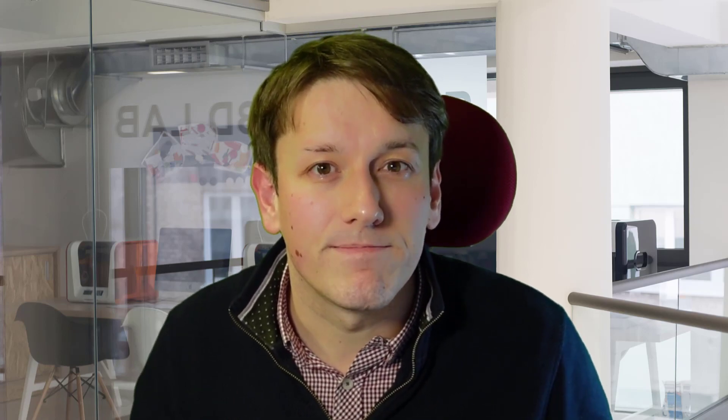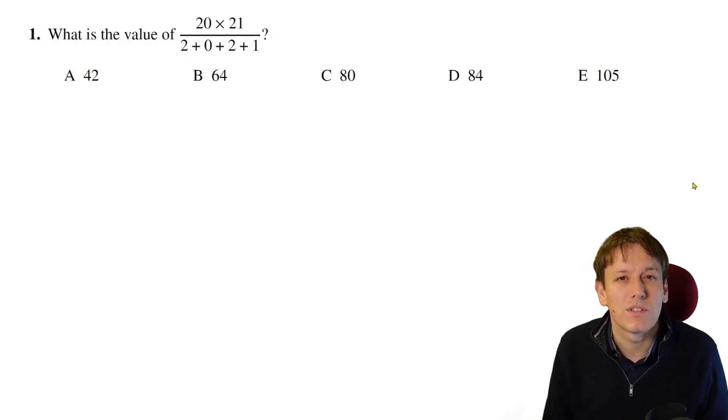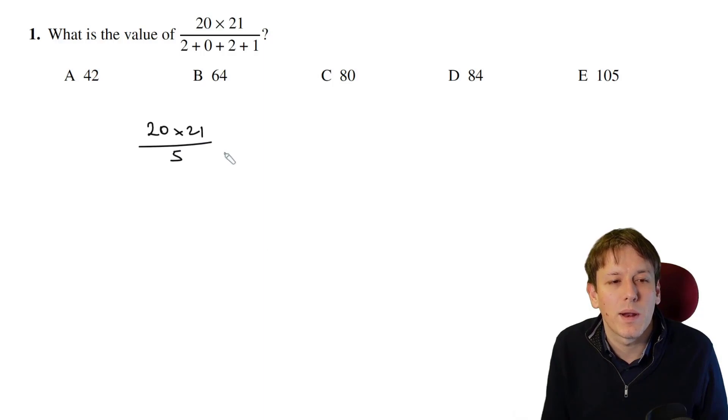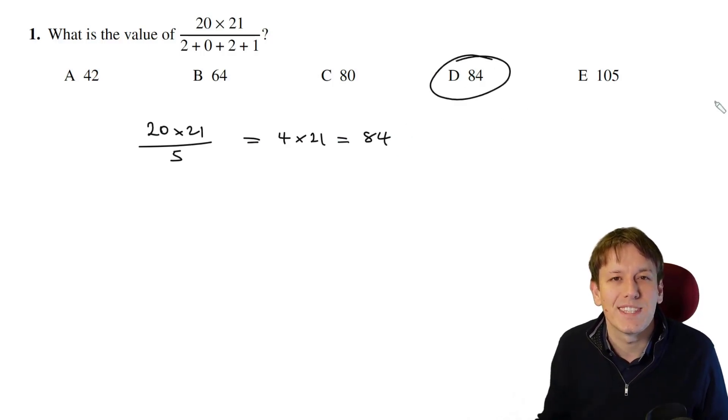If you'd rather stay here on YouTube, you're very welcome. Please do like the video and subscribe to the channel if you haven't already. It really helps me get the content out there, so let's get on with these questions now. Question 1 isn't difficult, but we still want to do it efficiently to save time. We've got 20 times 21 over 2 plus 0 plus 2 plus 1, so that's 20 times 21 divided by 5. If we spot there's a factor of 5 in the 20, we can say this is just 84, so the answer is D.